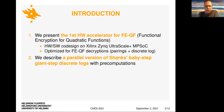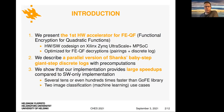One of the central contributions of our work is a parallel version of Shank's famous baby step giant step discrete logarithm algorithm, and we utilize pre-computations and parallel processing in that algorithm. What we show is that our implementation provides large speedups compared to software-only implementations. We get several tens or even hundreds of times faster results than a software library called GoFe, designed for the same operation. We also showcase two practical use cases in the domain of machine learning, particularly image classification, and show that these speedups translate also to practical use cases.